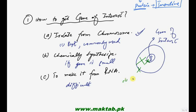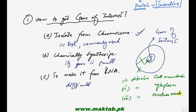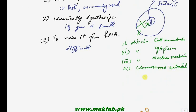Cell से DNA extract करने का process: dissolve cell membrane, dissolve cytoplasm, dissolve nuclear membrane - फिर chromosome extracted आएंगे। Chromosome से gene of interest निकालना है - यह थोड़ा difficult procedure है। Chromosome से gene of interest identify हो जाने के बाद उसे cut करने के लिए molecular scissors use करते हैं, जिन्हें हम restriction enzymes कहते हैं।